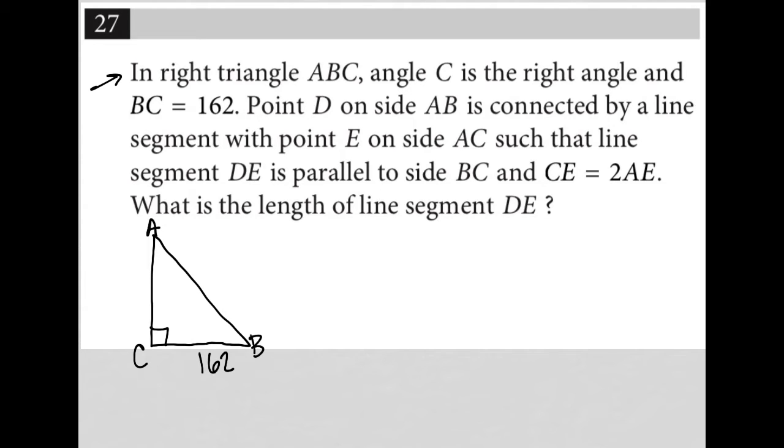Perfect. Point D on side AB is connected by a line segment with point E on side AC, such that line segment DE is parallel to BC. So let's draw that first. Let me continue reading. Such that line segment DE is parallel to side BC and CE is 2 times AE.